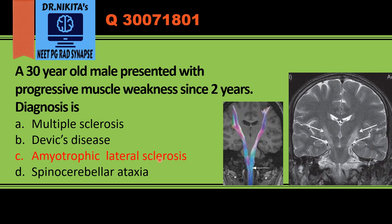Amyotrophic lateral sclerosis is the most common rapid form of motor neuron disease. It affects both upper and lower motor neurons. Because of neuronal loss in the cortex, the distal white matter starts having Wallerian degeneration. In Wallerian degeneration, there is increased water content in the myelinated axons, and water is white on T2, so you will have hyperintensity in the corticospinal tracts.